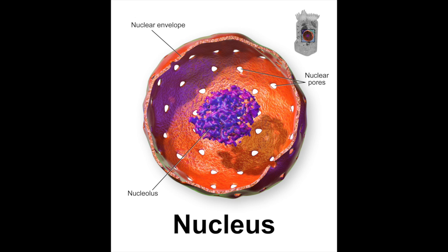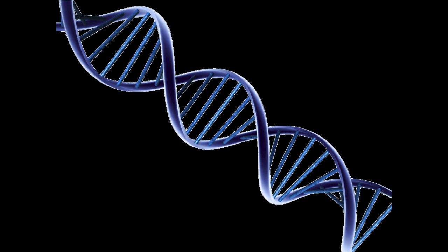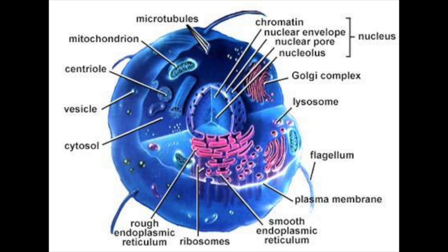This next part of the cell is probably the most important part — it is the nucleus. The nucleus runs and processes everything that happens in the cell. On top of that, it holds all of your genetic information. The genetic information is what makes you, you. It tells the cell how to build itself, which then builds you.